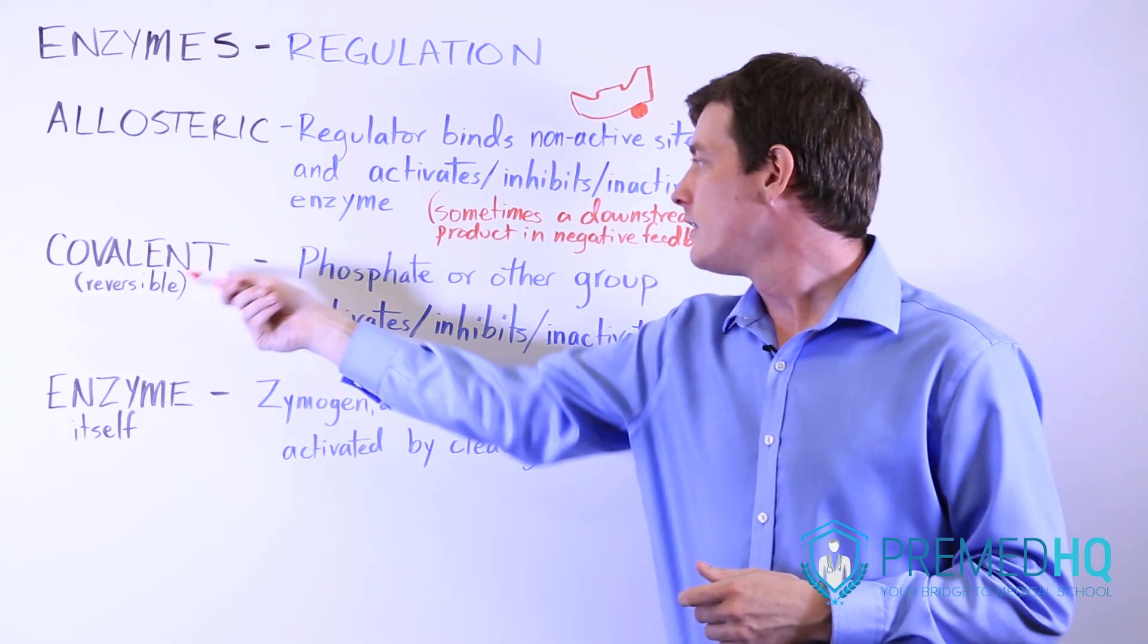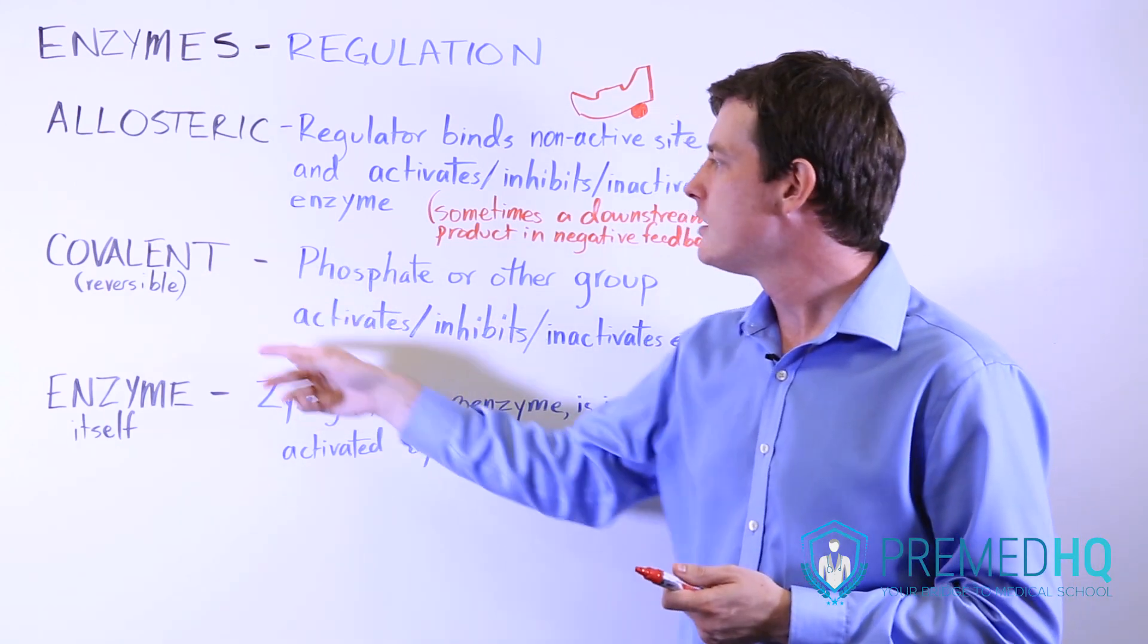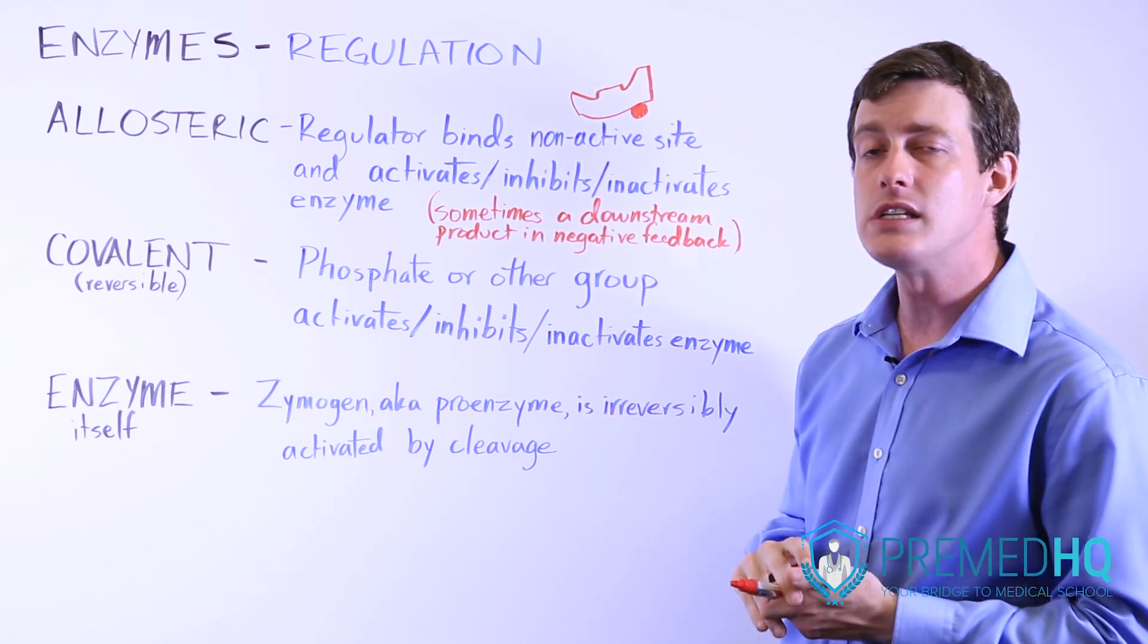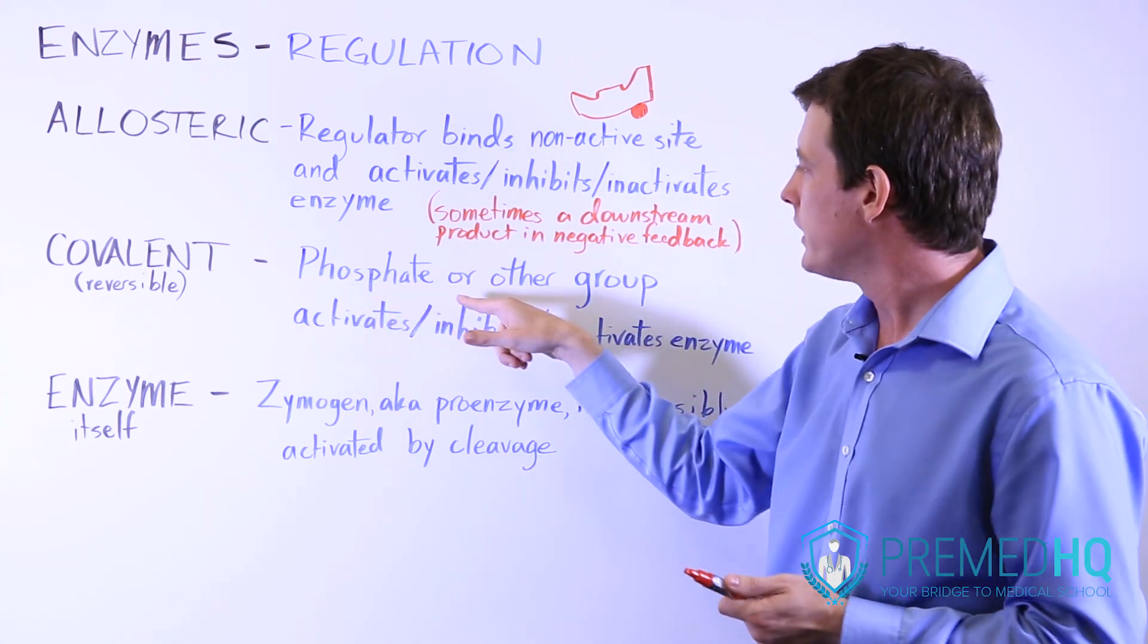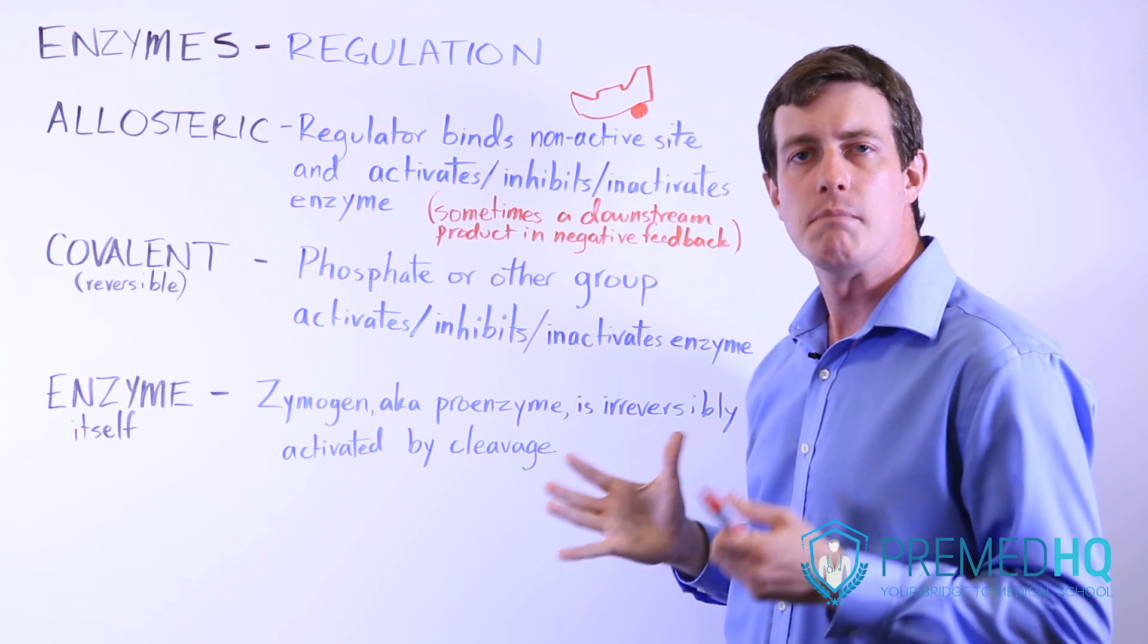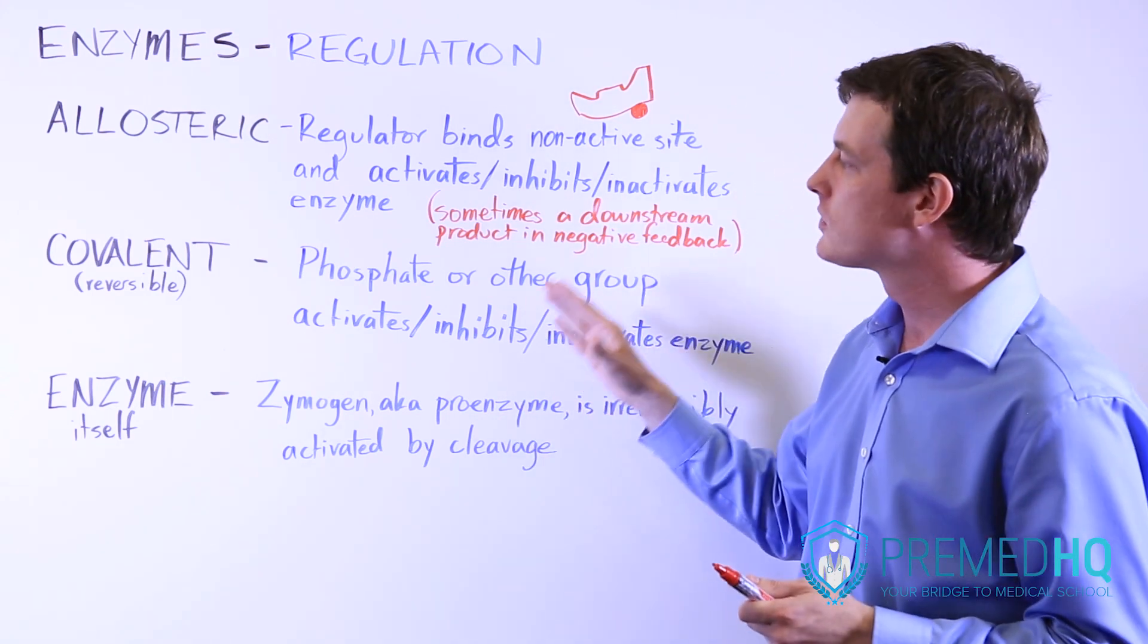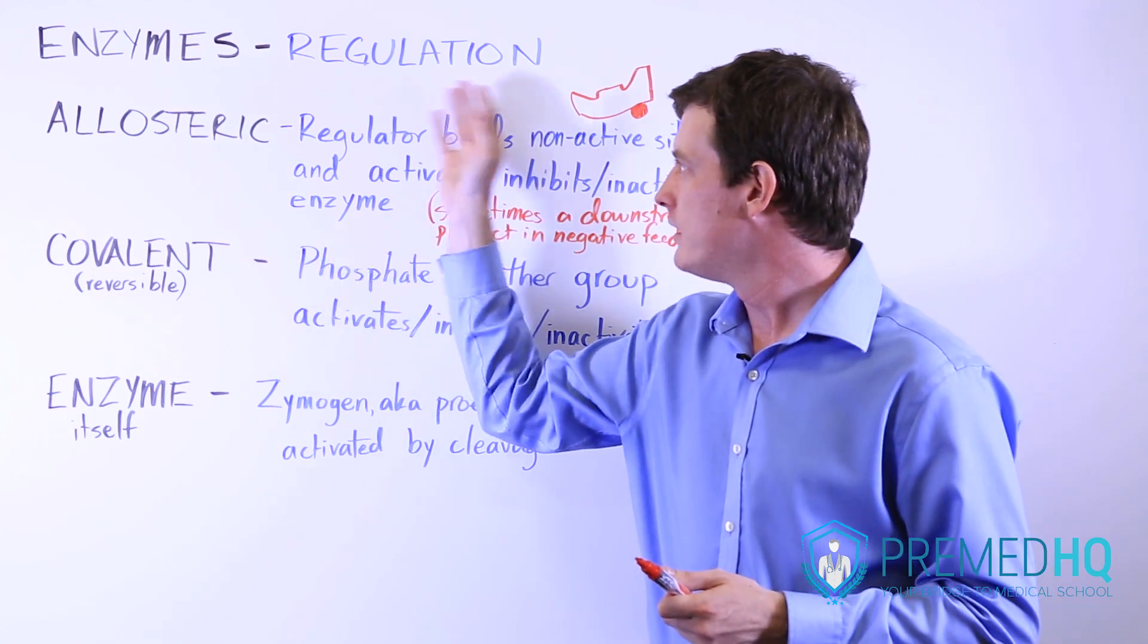The next one is covalent regulation. And it's important to note that this is reversible covalent regulation. You see this a lot with phosphate groups, although other groups like methyl groups and acyl groups can also be used to regulate enzyme function.